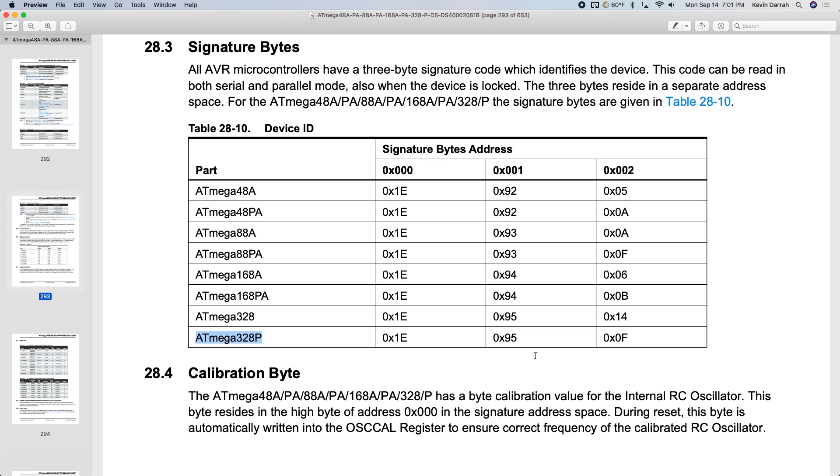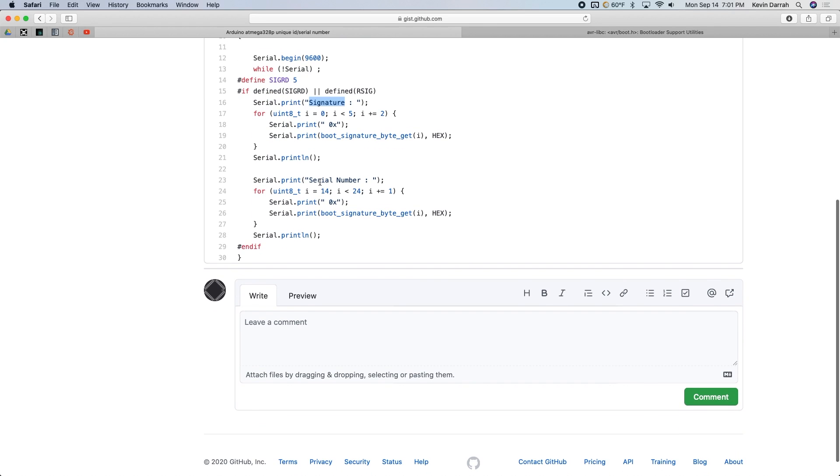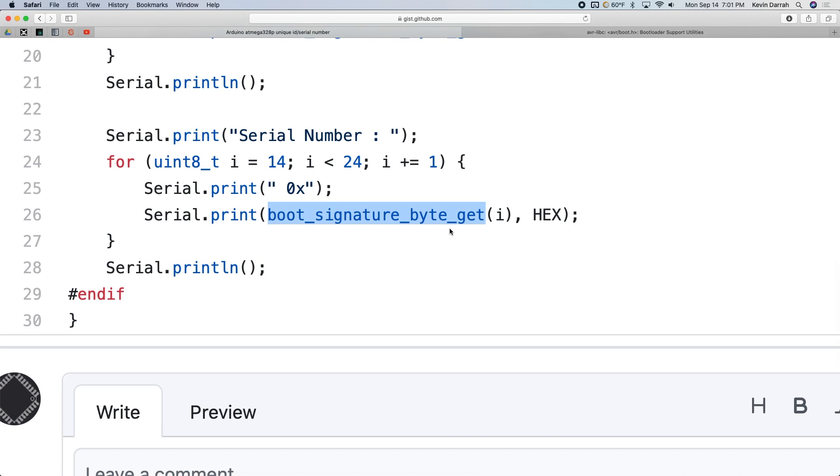But this did lead me down another path, which was I was looking at this test code here. And this actually reads the signature bytes out, but also reads out a serial number just at different locations using that same function, the boot signature byte get.